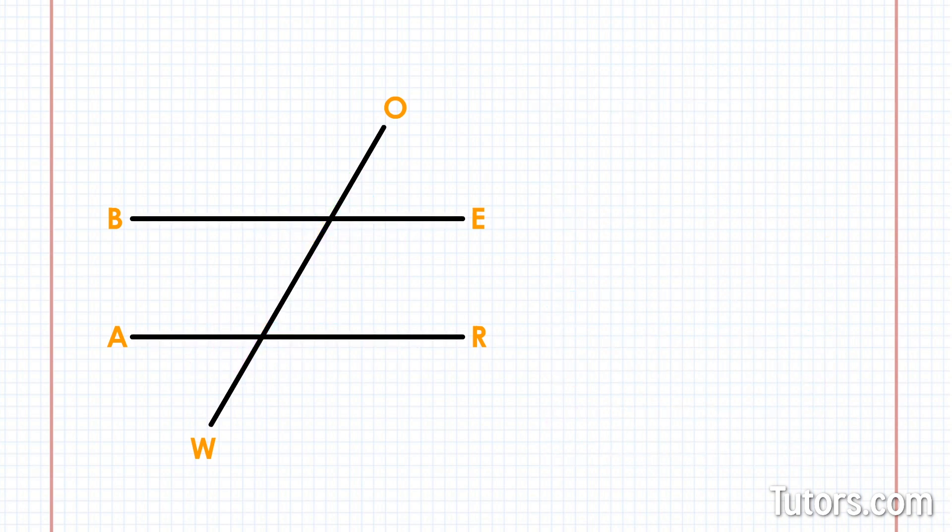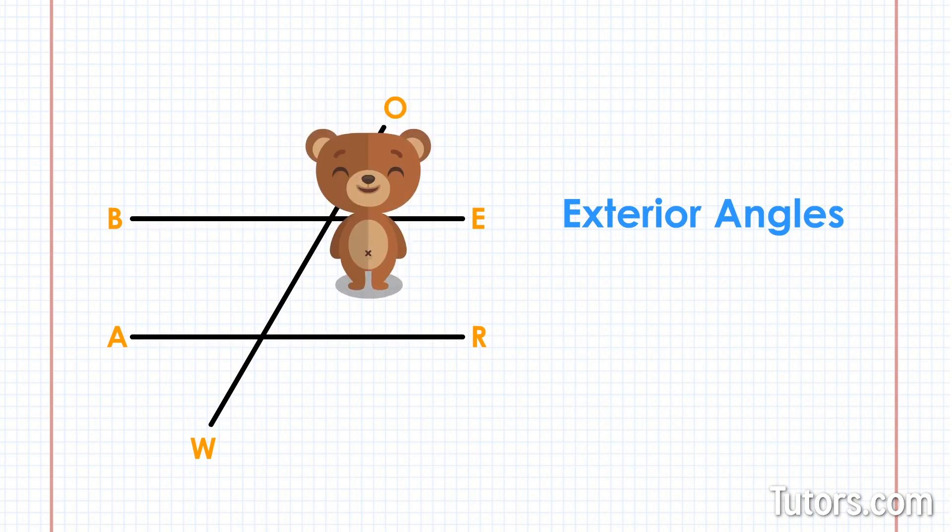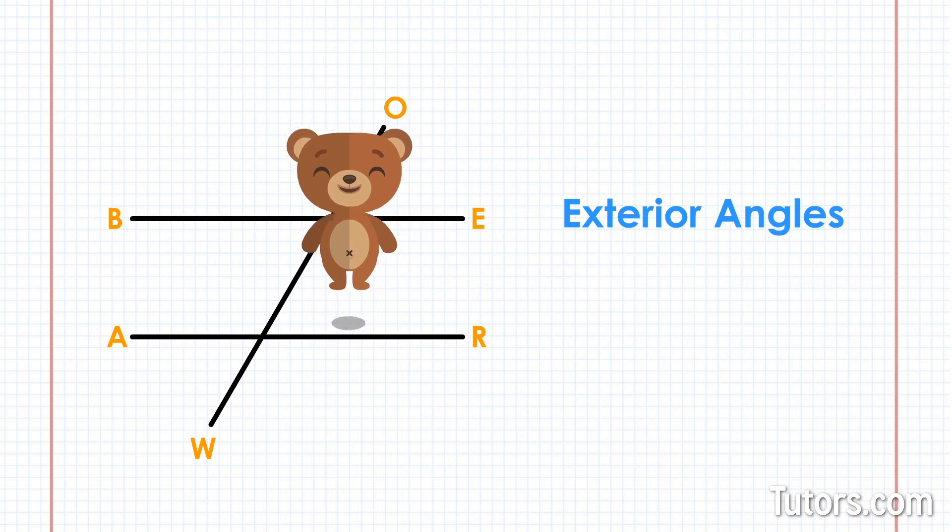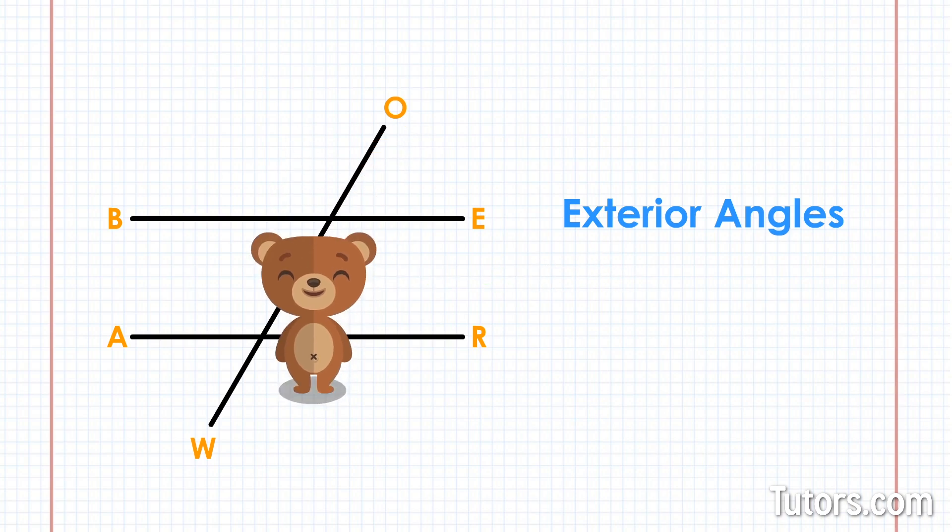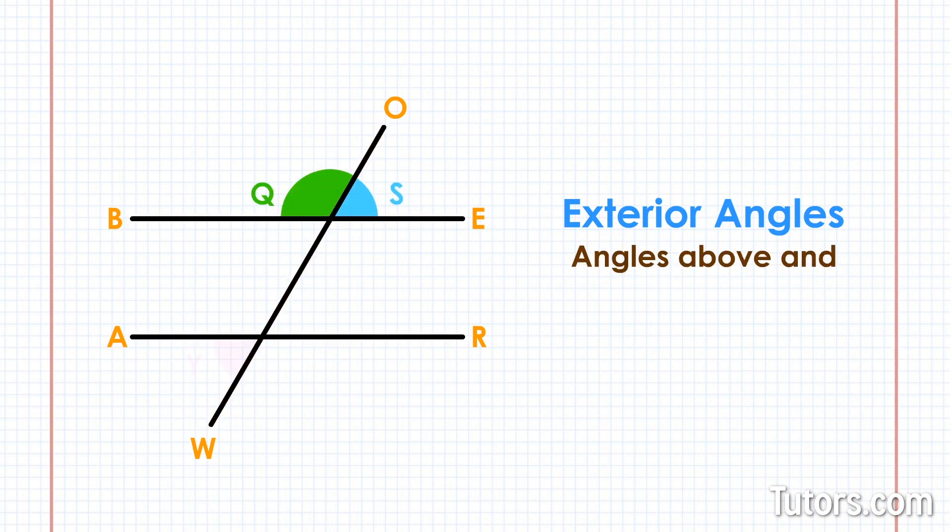Let's take a look at our exterior angles. Think back to those railroad tracks. If you were between the train tracks, you would be inside the lines. If you stepped across the tracks, you would be outside the lines. The same is true with parallel lines BE and AR and their transversal OW. The angles above and below the parallel lines are outside and are called exterior angles.